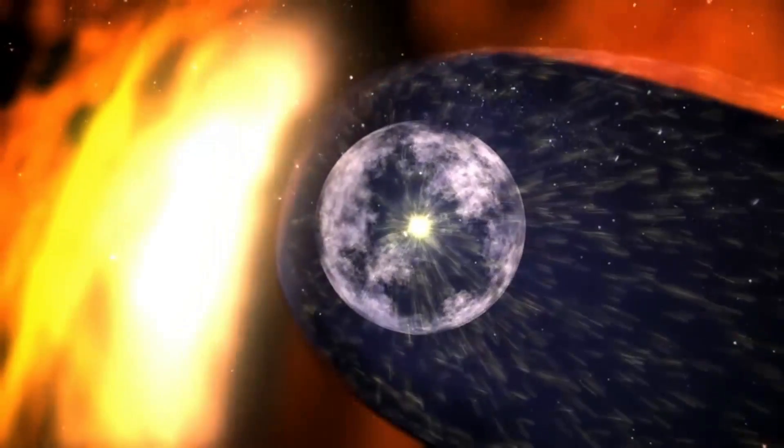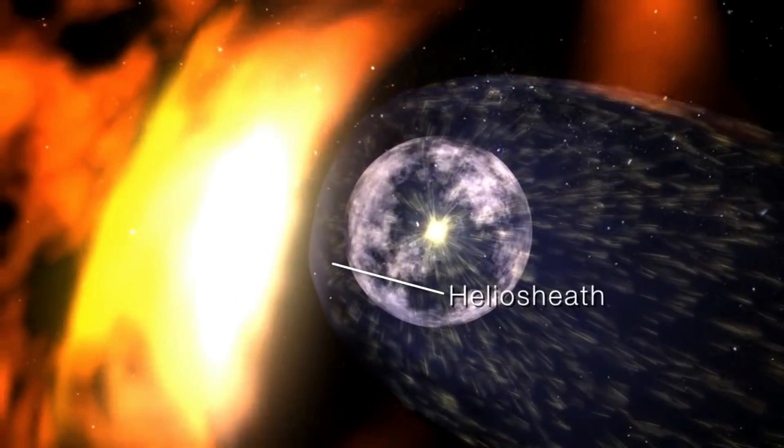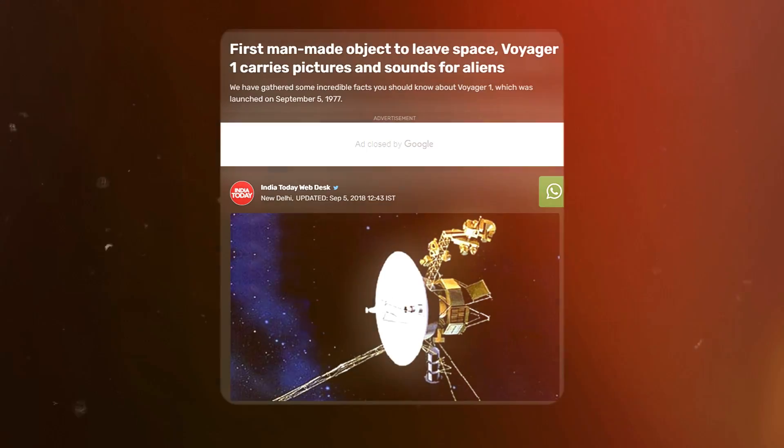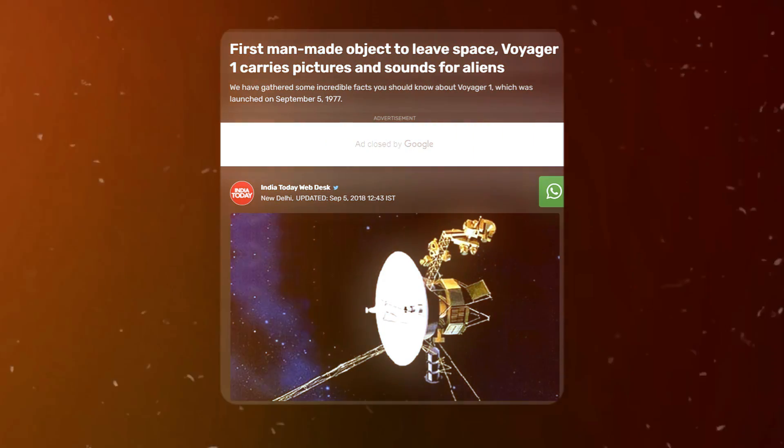They passed through the heliosheath, the outermost layer of the heliosphere, and into interstellar space, becoming the first human-made objects to venture beyond our solar system.